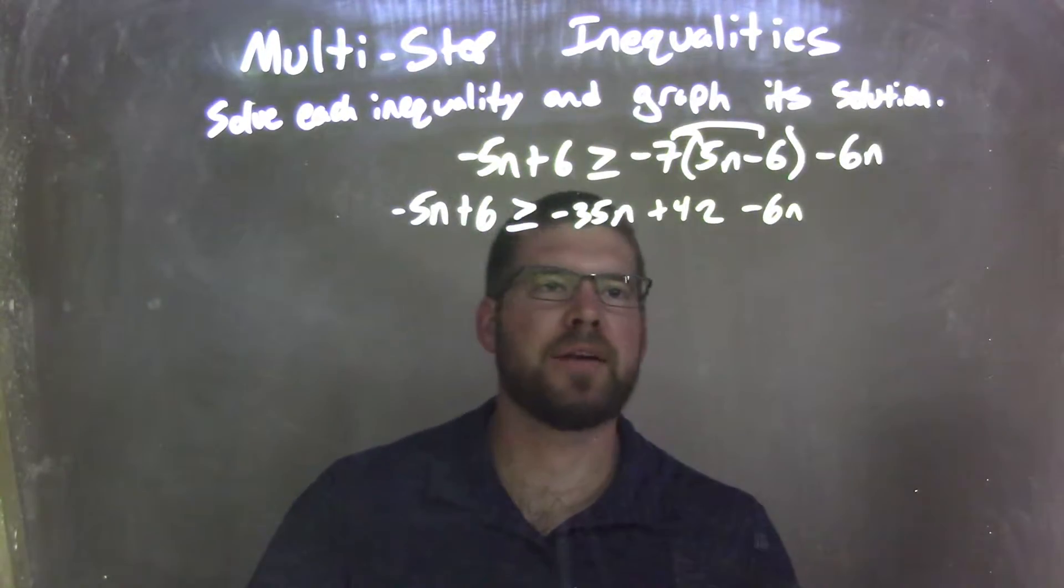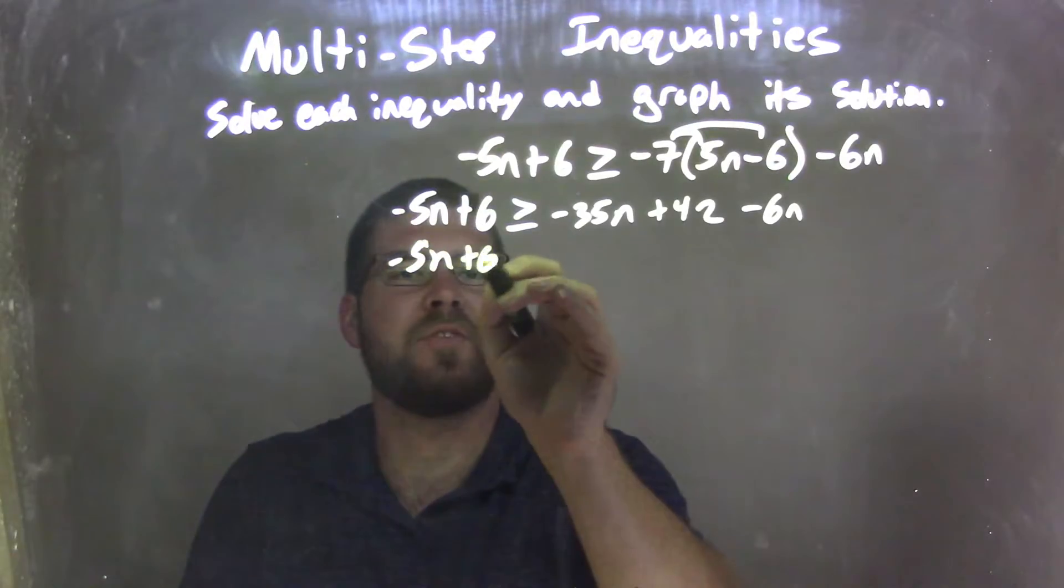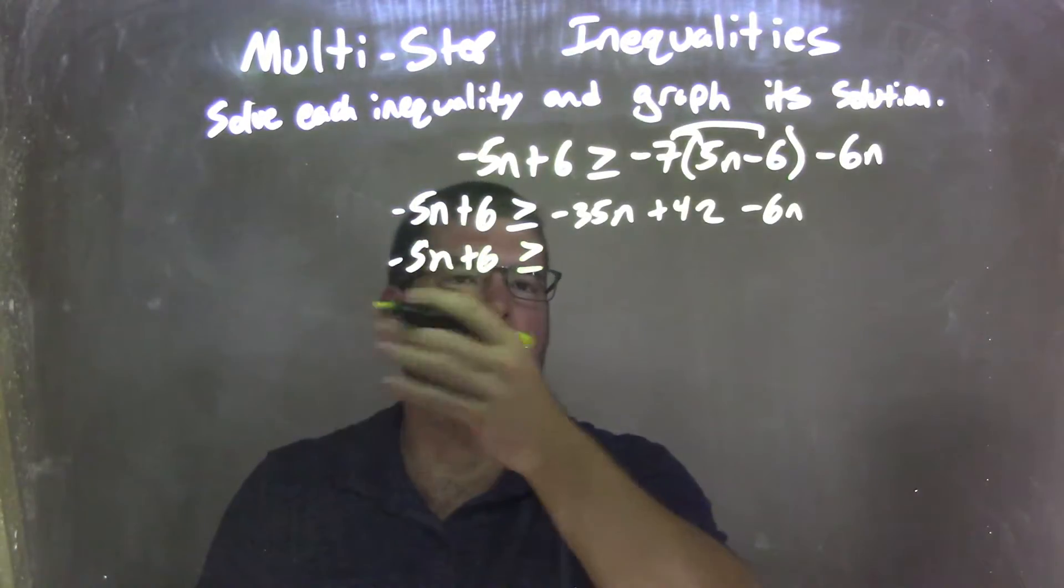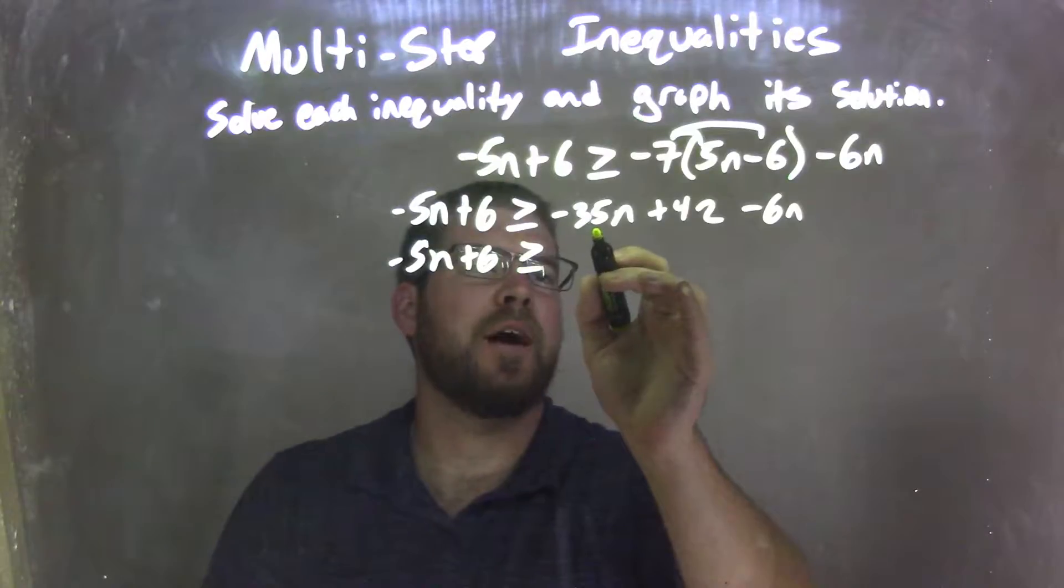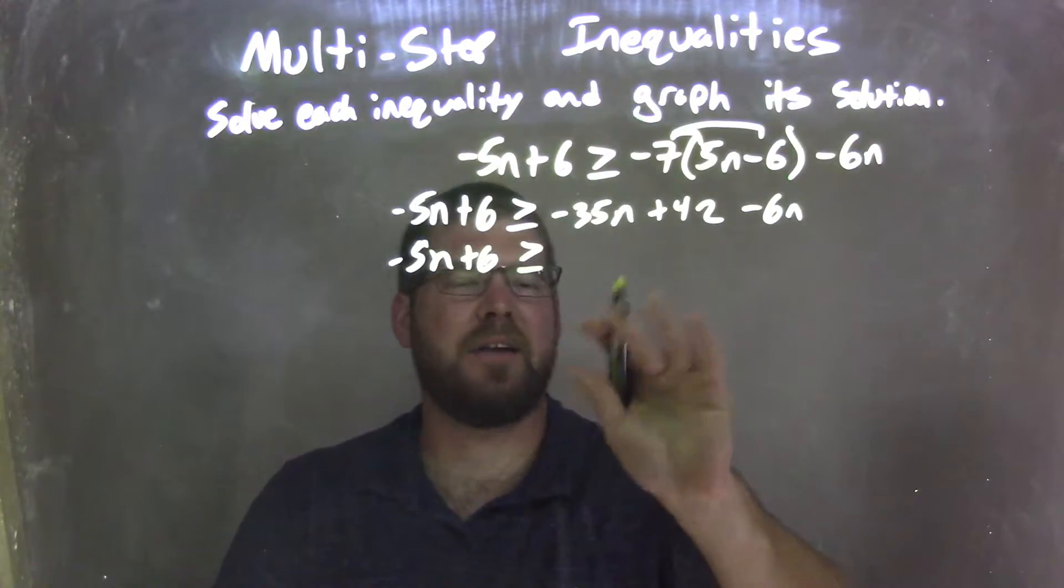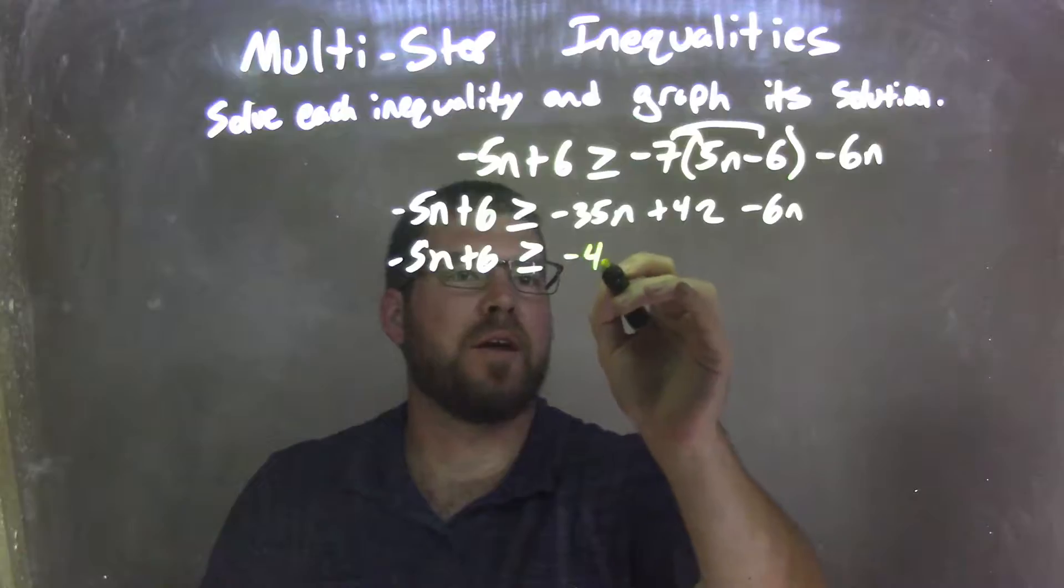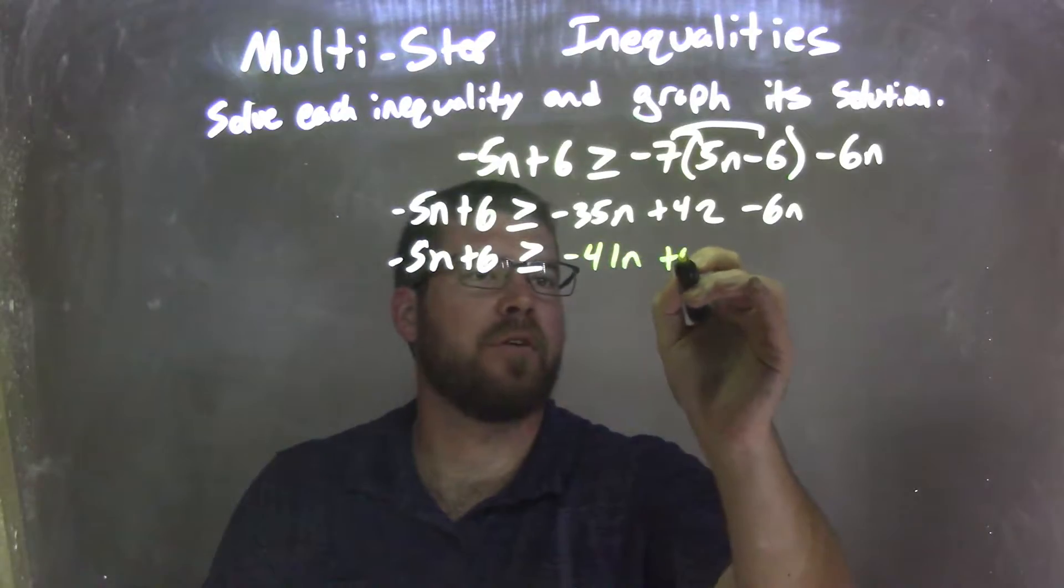So now let's combine the like terms on each side. We have negative 5n plus 6. I'm going to leave that by itself because there's nothing to combine there. And then negative 35n minus 6n, we combine them together, and that becomes a negative 41n plus 42.